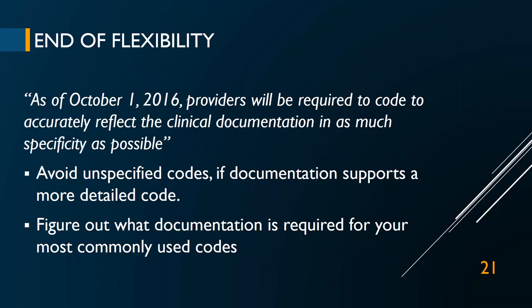The same rule applies here that we've referred to forever: don't use unspecified codes if you can help it. If your documentation supports something more detailed, you should definitely code for that more detailed thing. Unspecified codes are going to be triggers for auditors to go in and see what you're doing — it's easier for them to suspect something is going on. It behooves you to find the more detailed code and use it, because you'll stand up better to scrutiny. Unspecified codes are okay to use but only when they're the best option you have.